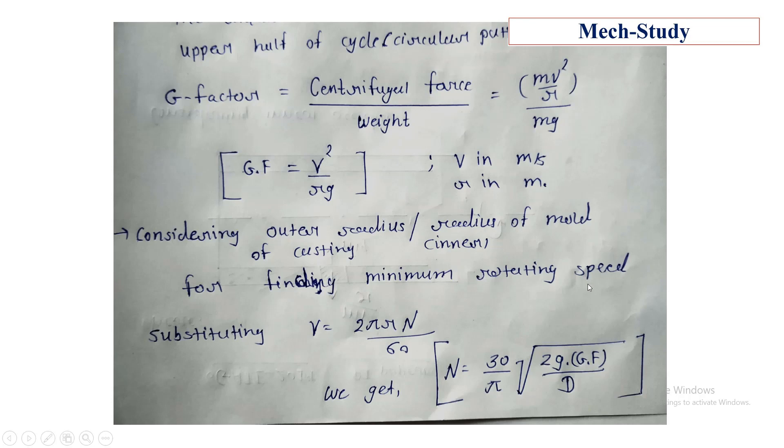This is because centrifugal force should be strong enough to hold the liquid metal stick to the wall of the casting. Now substitute v equals 2 pi r N upon 60 to find rpm, to find rotational speed N. By substituting this value in G-factor we got rotational speed in this expression.